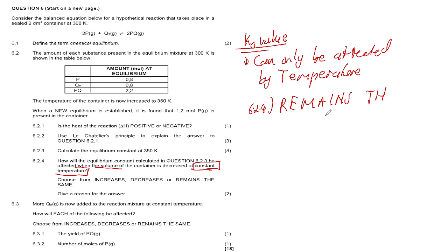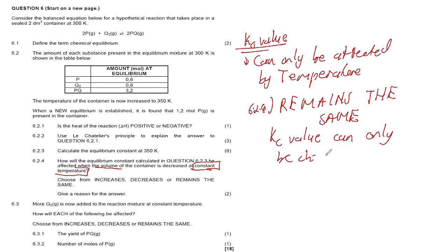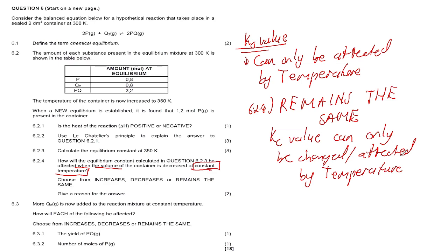The reason is: Kc can only be changed or affected by temperature. If they increase or decrease concentration, if they decrease pressure, increase volume — as long as the change is not temperature, the Kc value will just remain the same.